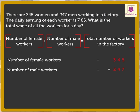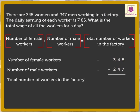The number of women working in the factory is 345 and the number of men working in the factory is 247. Let us add these numbers to get the answer. Thus, the total number of workers working in the factory is 592.